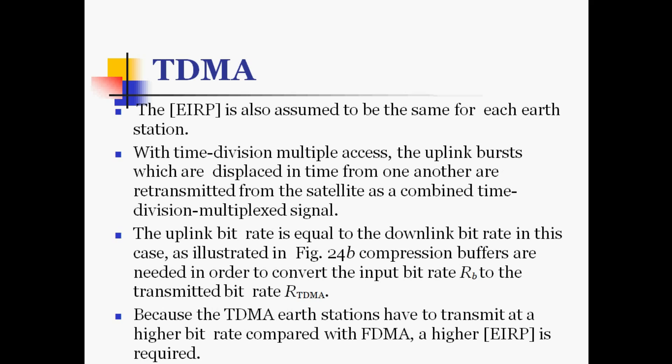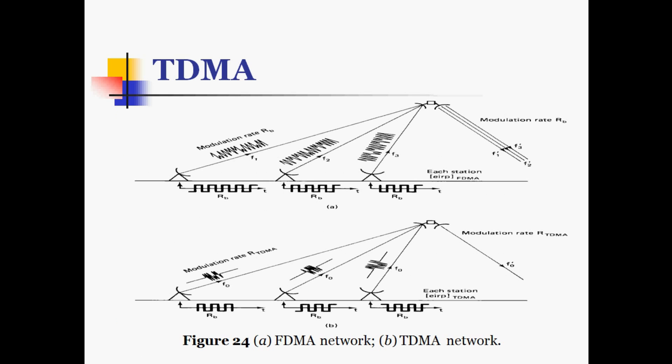The EIRP is also assumed to be the same for each earth station. With time division multiple access, the uplink bursts which are displaced in time from one another are retransmitted from the satellite as a combined time division multiplex signal. The uplink bit rate equals the downlink bit rate, and compression buffers are needed to convert the input bit rate RB to the transmitted bit rate RTDMA. Because TDMA earth stations transmit at a higher bit rate compared with FDMA, a higher EIRP is required.